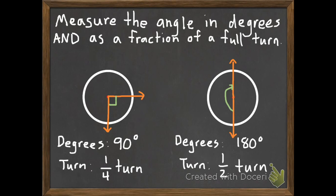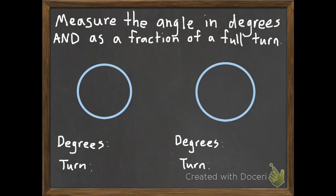Now I want you to do these next two. So I'll erase those ones and make some new ones. So I want you to pause this and to figure out the degrees and the turn for each of these two. And then unpause it and these ones I'll show you the answers to see if you're getting them right.